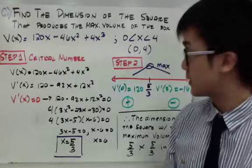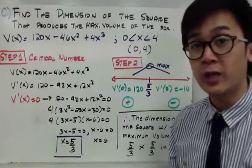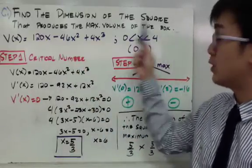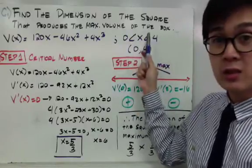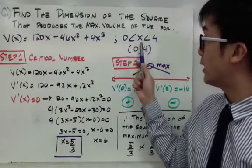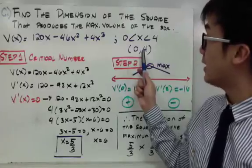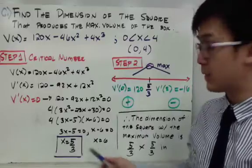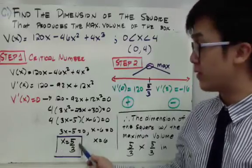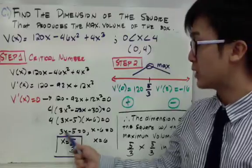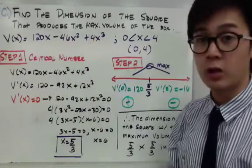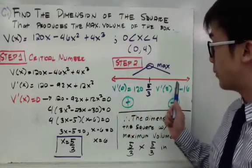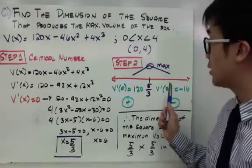Now that we have two values of x, we need to choose which one falls within our domain restriction of 0 to 4. Between 5/3 and 6, only 5/3 is inside the interval. This is the critical number we use in our sign chart to verify whether it produces a maximum or minimum volume.